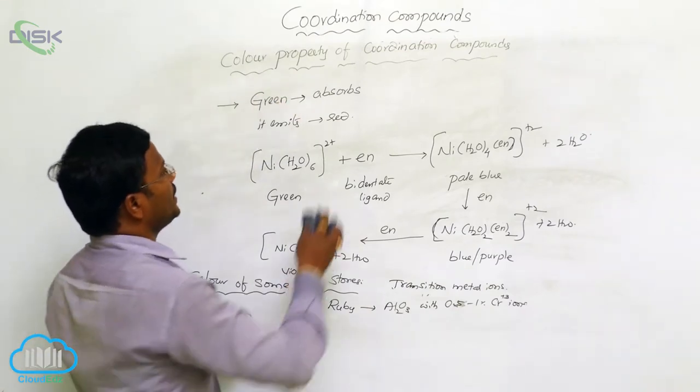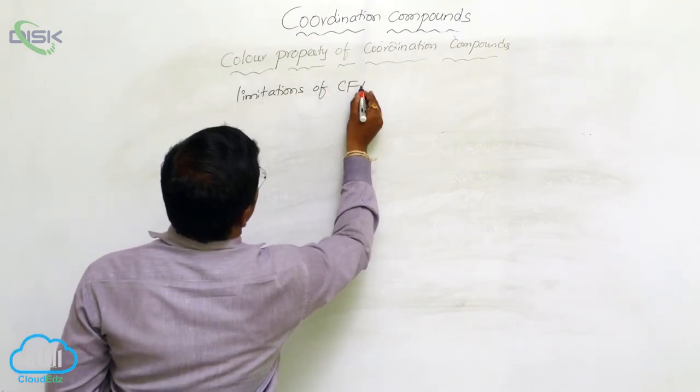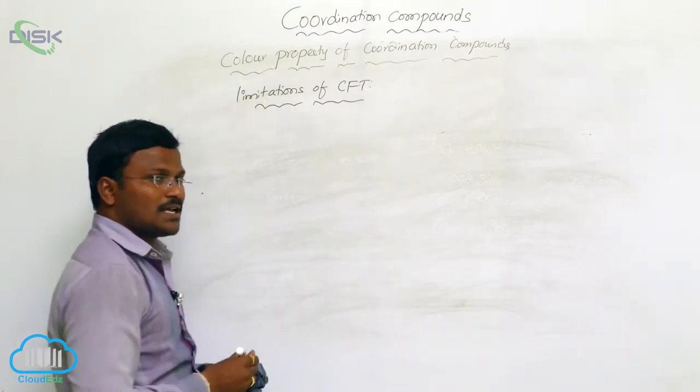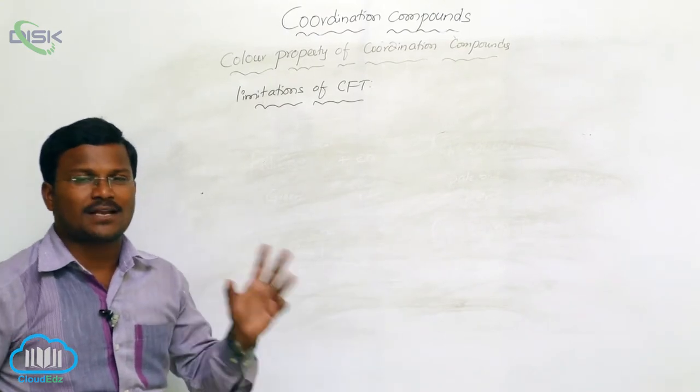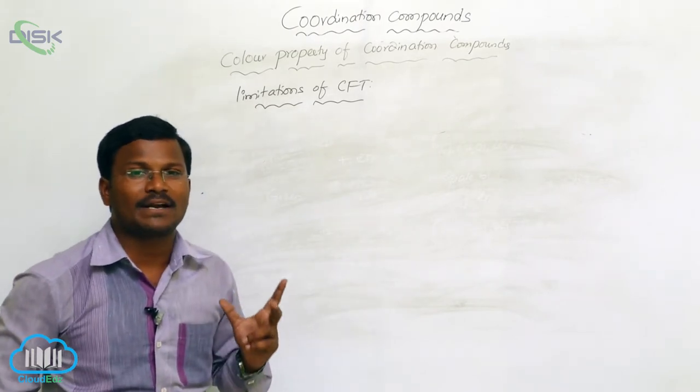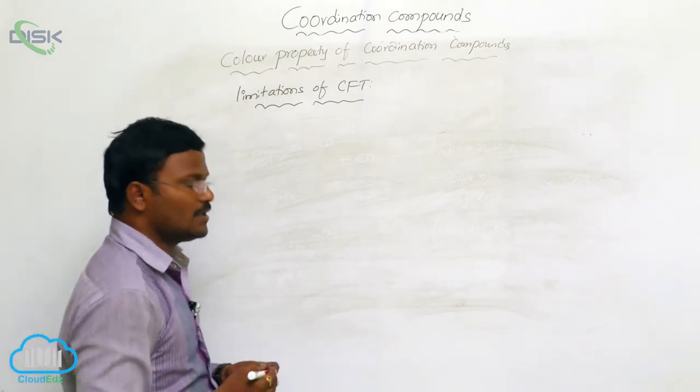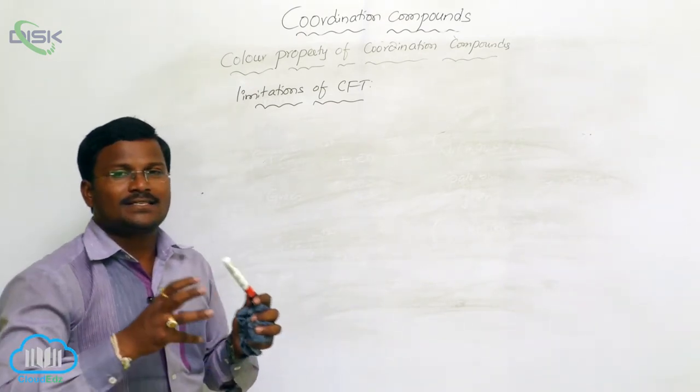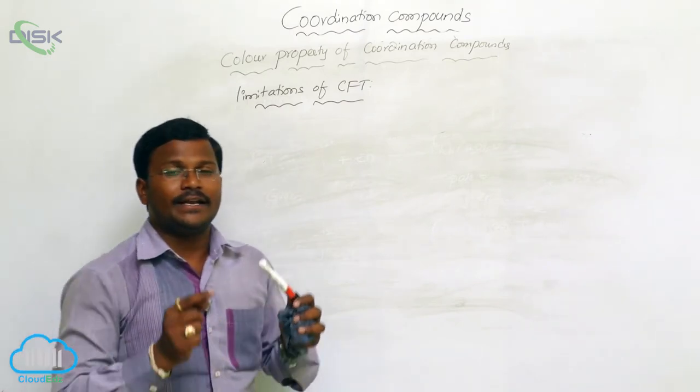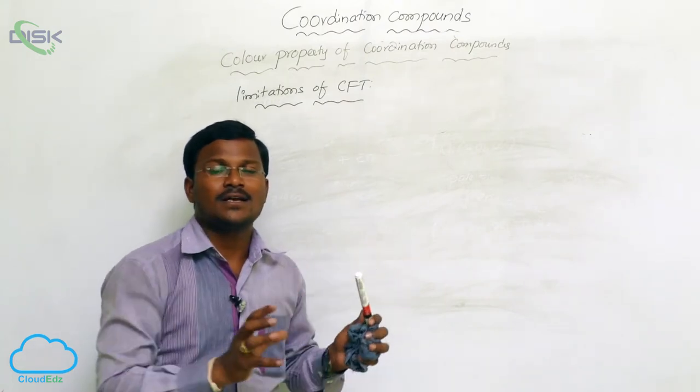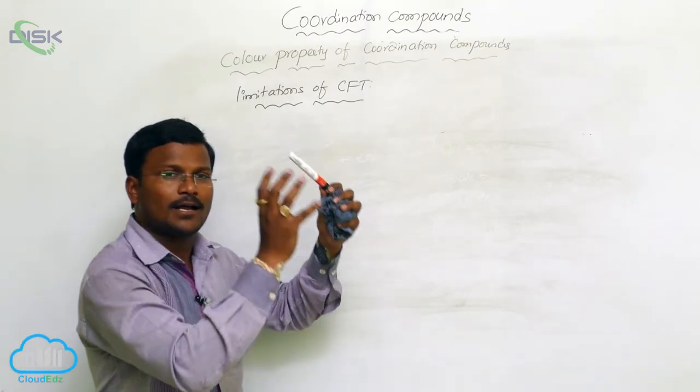Limitations of crystal field theory: As we know, crystal field theory is very successful in formation and to explain the structure, color, and magnetic properties of coordination complexes. However, some limitations are identified. Every ligand is considered as point pole structure. In such case, negatively charged ligands have to work as strong field ligands than neutral field ligands, because the negative charge has to more repulse the orbitals than neutral ligands.